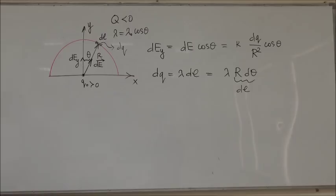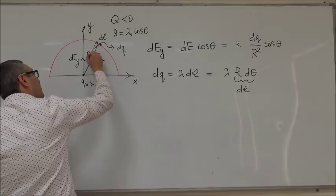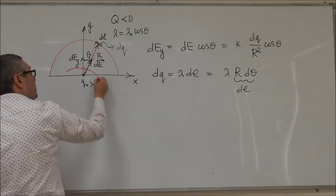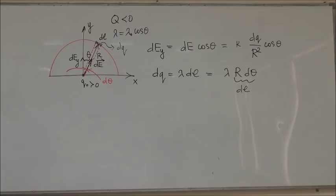The D theta angle here is this small angle within which we have this element, DL. So, this is our D theta.